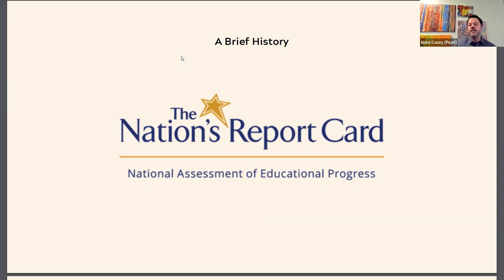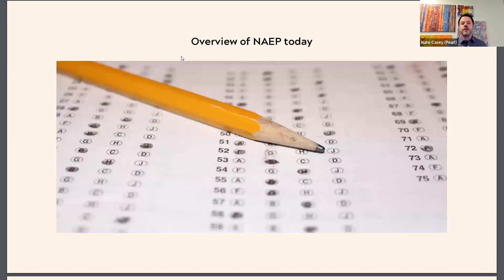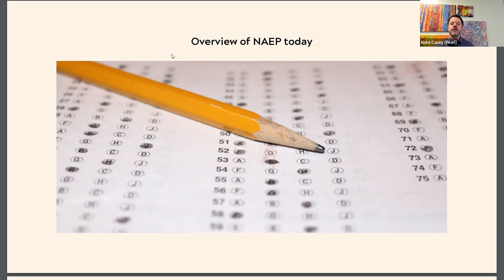Today, under ESSA — the Every Student Succeeds Act — the states have a lot more autonomy regarding education standards, which is why we now actually have one state, Nebraska, that does not give a standard state test. The NAEP test is given to a randomized group of fourth graders and eighth graders in all 50 states — somewhere around 450,000 students across 10,000 schools — and it covers both math and reading on a scale of 0 to 500.